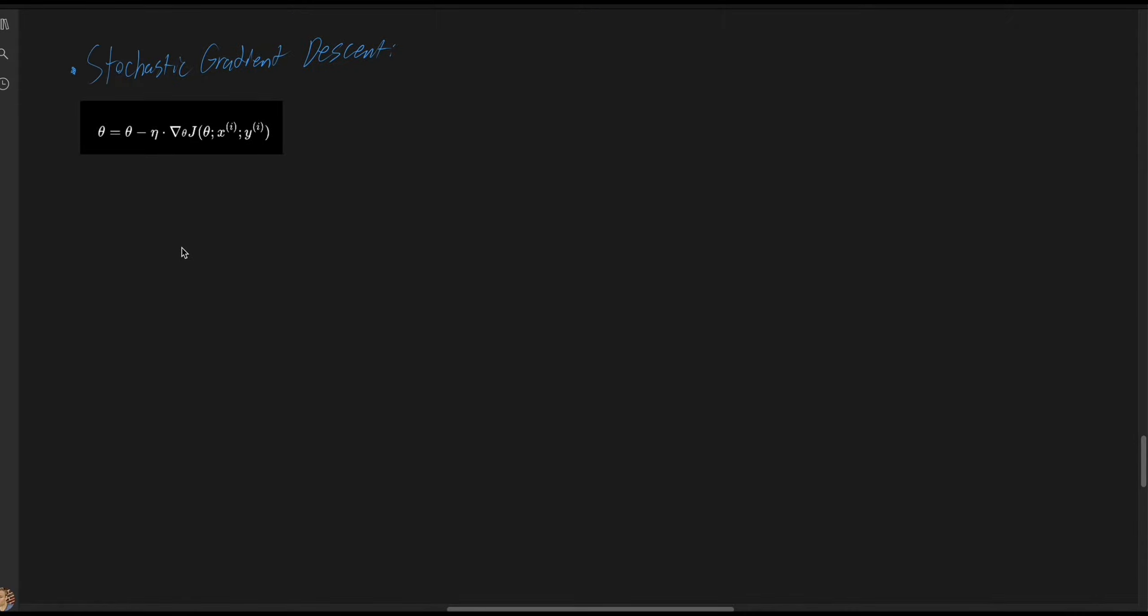Stochastic gradient descent is a variation of gradient descent, except it runs faster by updating the model's parameters using only a single sample.